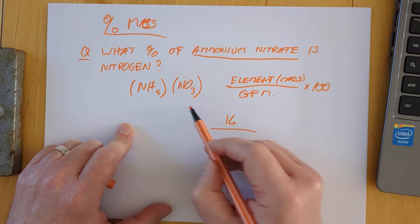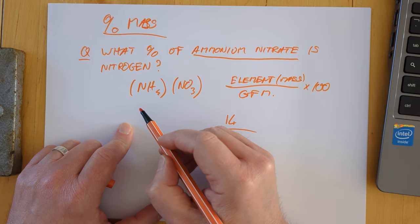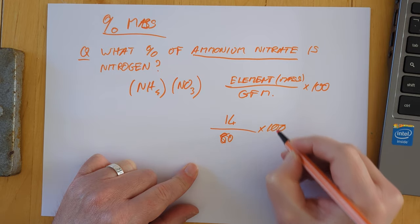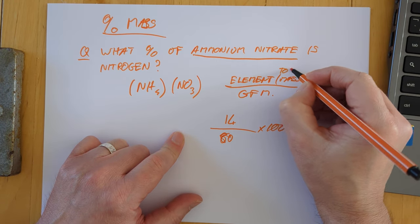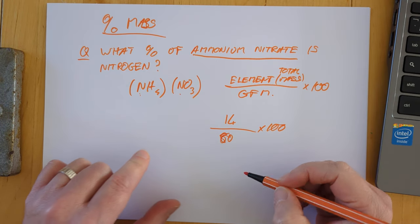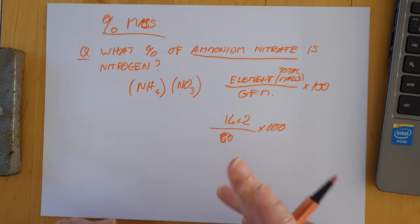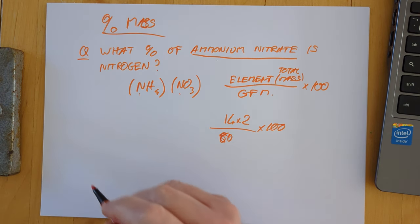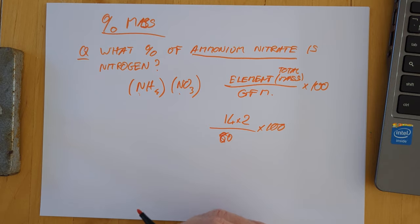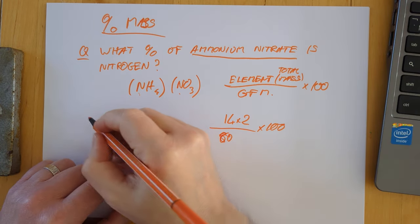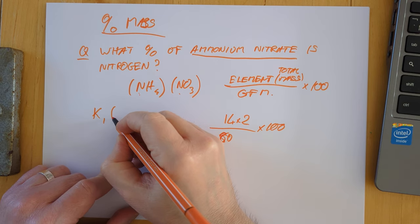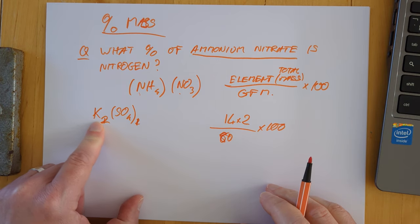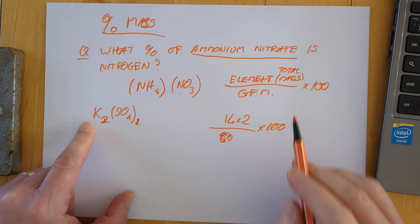In this case with ammonium nitrate you might be tempted to say nitrogen so we would have 14 divided by the GFM of this, 14 over 80 times 100 and you'd be wrong. Because I did say it's the total mass of that element and there are two sneak appearances of nitrogen here. So in fact it's 28 over 80 times 100, that's your actual calculation. Watch for that in things that don't have a one-to-one valency. For example potassium sulfate would be K2SO4, so just in case it's the percentage of potassium just remember to multiply if you need to.